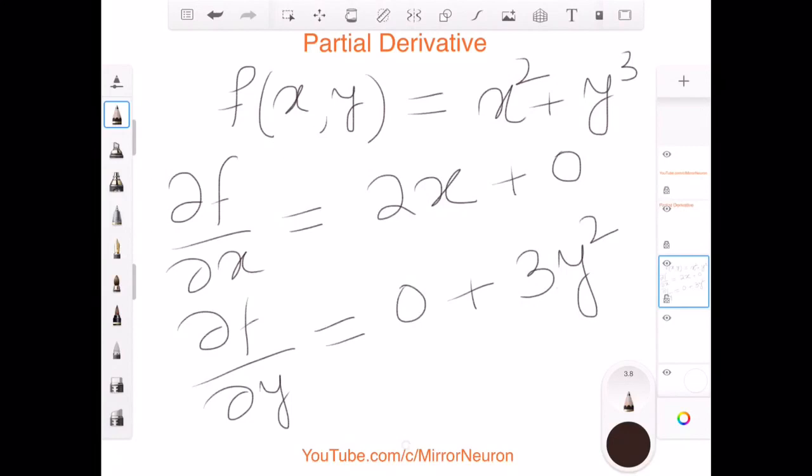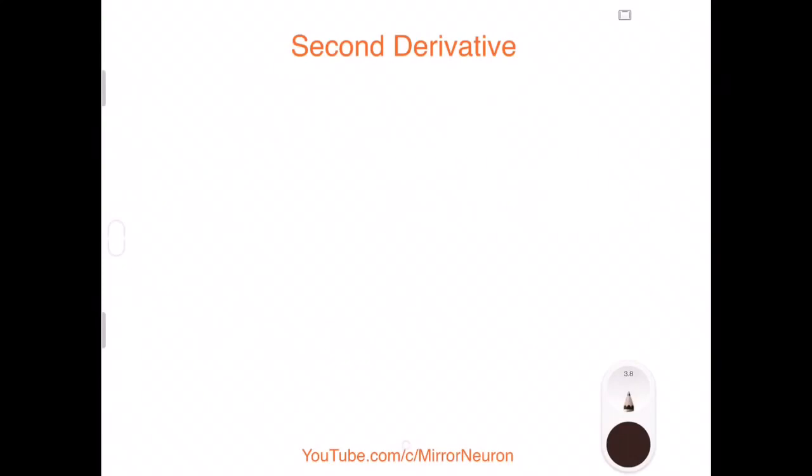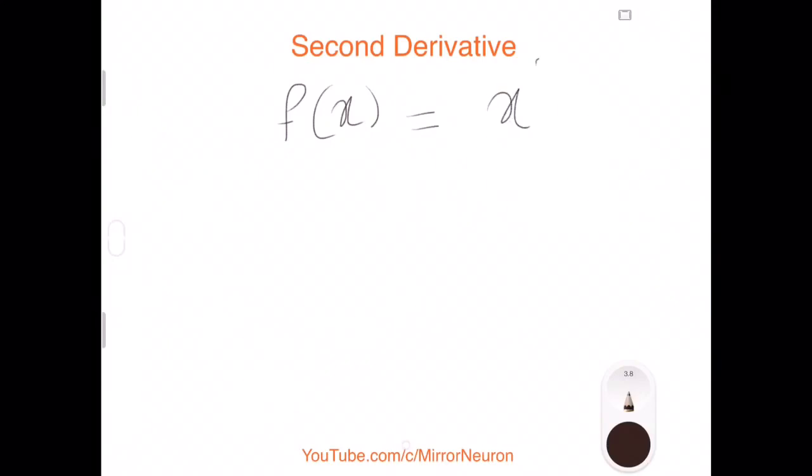Now let us look into another concept called second derivative. We have seen what is derivative. So for example, if my f(x) is equal to, this is slightly different than partial derivative. So just keep that in mind. So say I have f(x) of say x cube plus 2x. So this is one of my expressions.